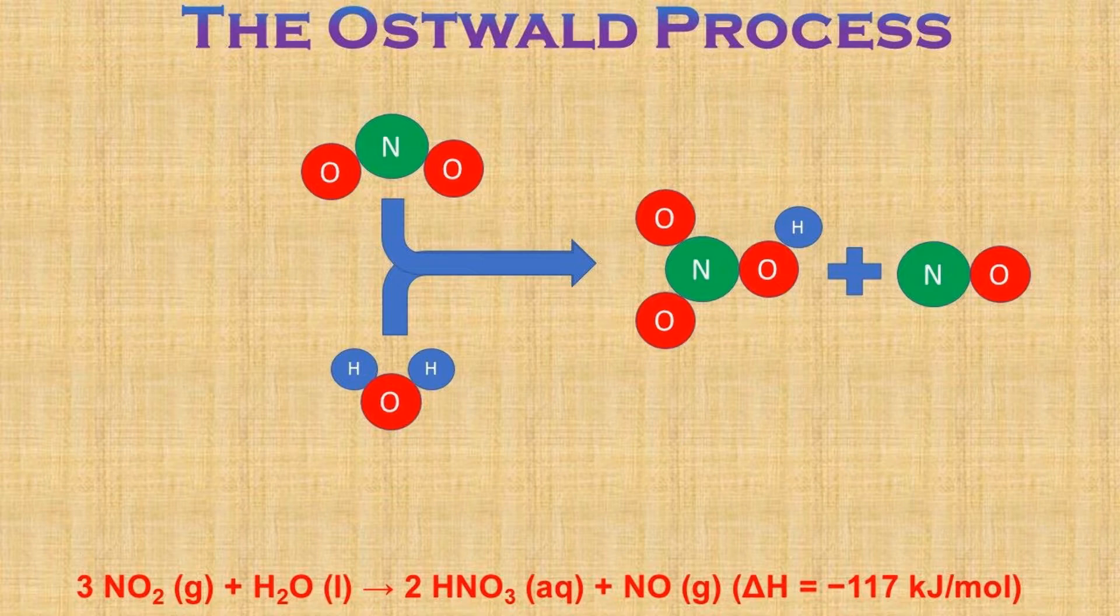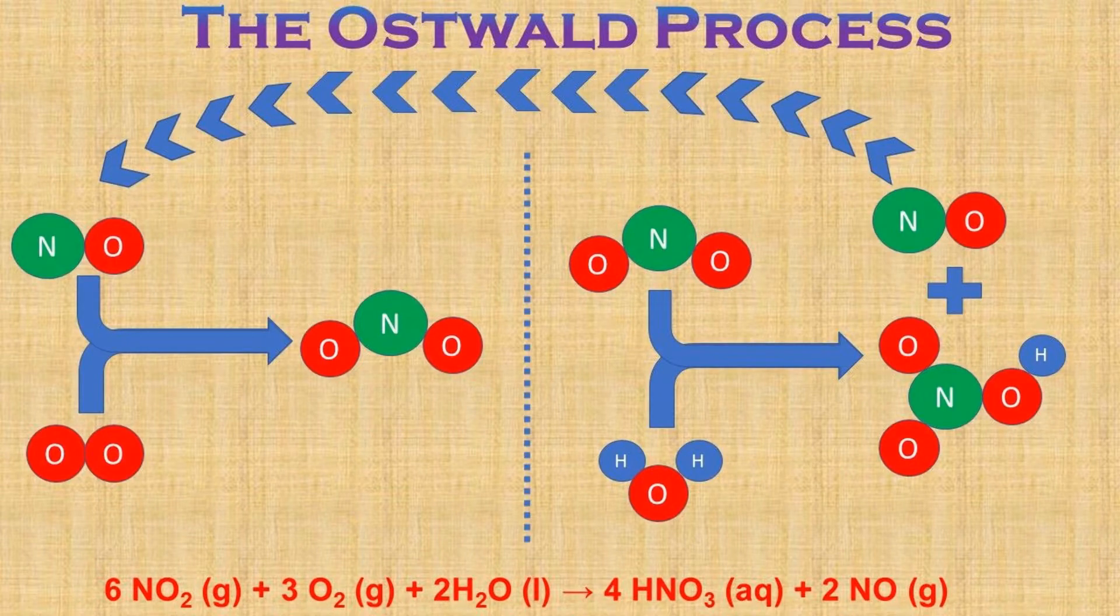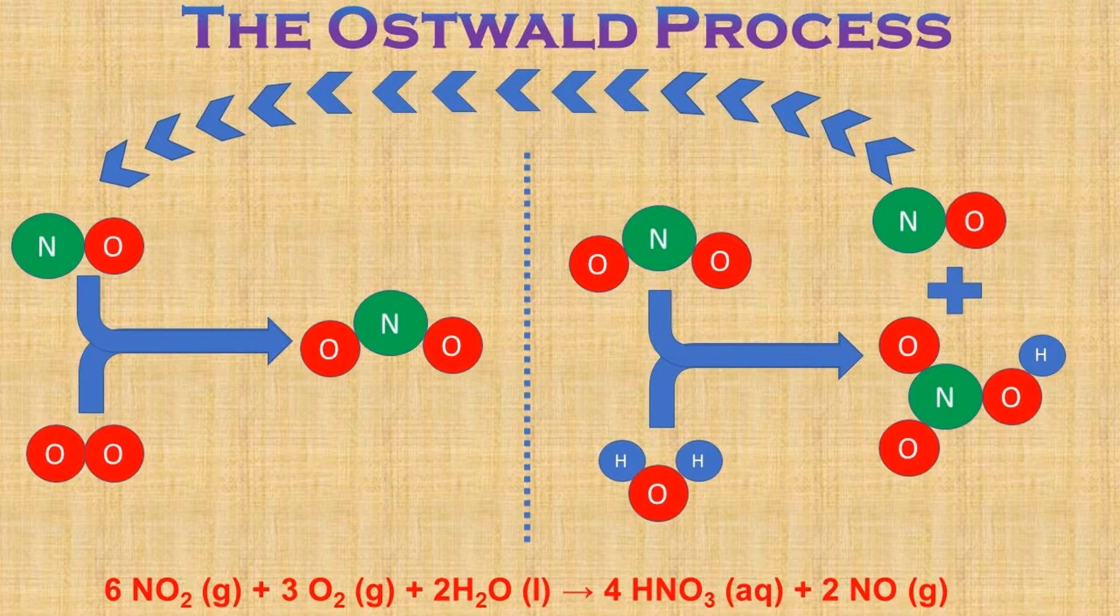A portion of the gas is reduced back to nitric oxide, which can then go through the cycle again. The dilute nitric acid is finally concentrated by distillation. In the industrial process the reaction is carried out at moderately raised pressures and temperatures in order to increase the yield.